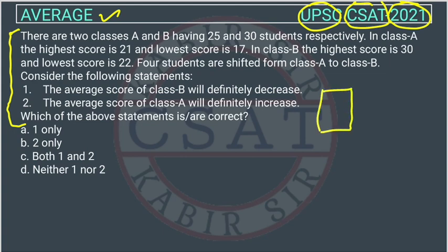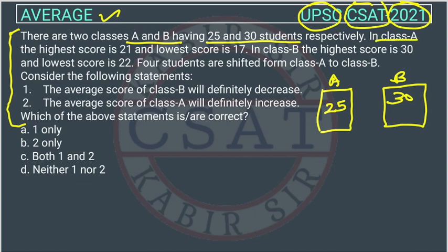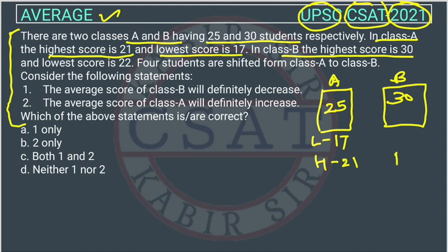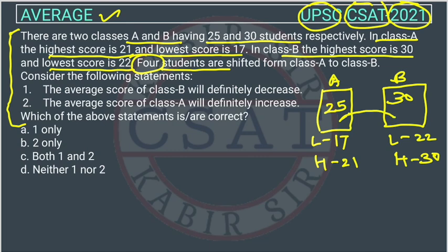There are two classes — Class A and Class B. Class A has 25 students and Class B has 30 students. In Class A, the highest score is 21 and the lowest score is 17. In Class B, the highest score is 30 and the lowest score is 22. Now, four students are being shifted from Class A to Class B.